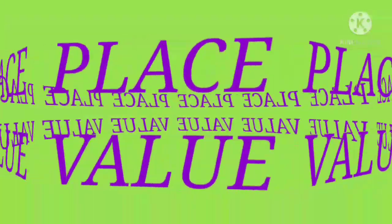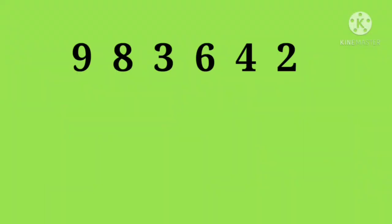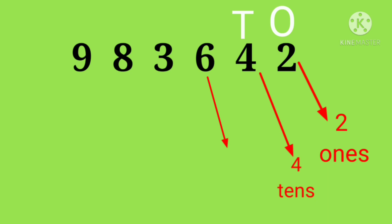Now let's go to place value. 9,83,642 is a number. 2 is under ones place, so its place value is 2 ones. 4 under tens, so it's 4 tens. 6 is under the hundreds place, so it is 6 hundreds. 3 under thousands, so it is 3 thousands.